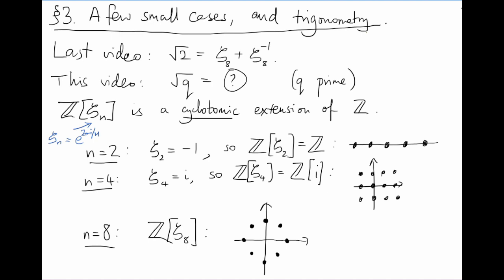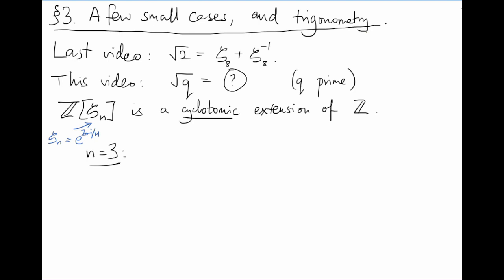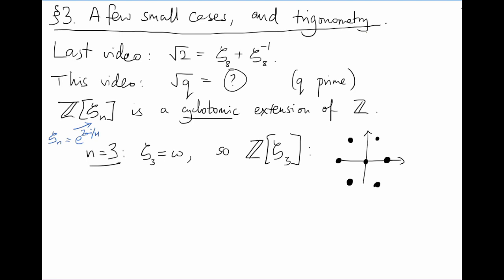We can use trigonometry to calculate the coordinates of this point — it's just (1 + i)/root 2. And now we can see where the square root of 2 might come from. There's also Z adjoin a primitive cube root of unity, which we've usually called omega. It's a lattice made up of equilateral triangles in the complex plane. Using trigonometry, the coordinates of this root of unity are (−1 + i root 3)/2. So we've stumbled across a root 3.